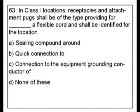Question 63. In Class 1 locations, receptacles and attachment plugs shall be of the type providing for blank, a flexible cord, and shall be identified for the location. Is it A. Ceiling compound around, B. Quick connection to, C. Connection to the equipment grounding conductor of, or D. None of these.